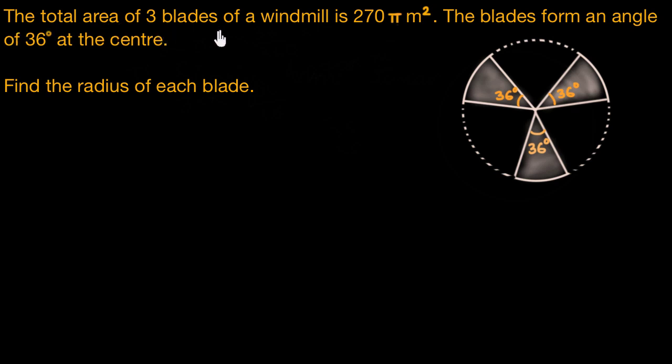The total area of three blades of a windmill is 270π m². The blades form an angle of 36° at the center. Find the radius of each blade.